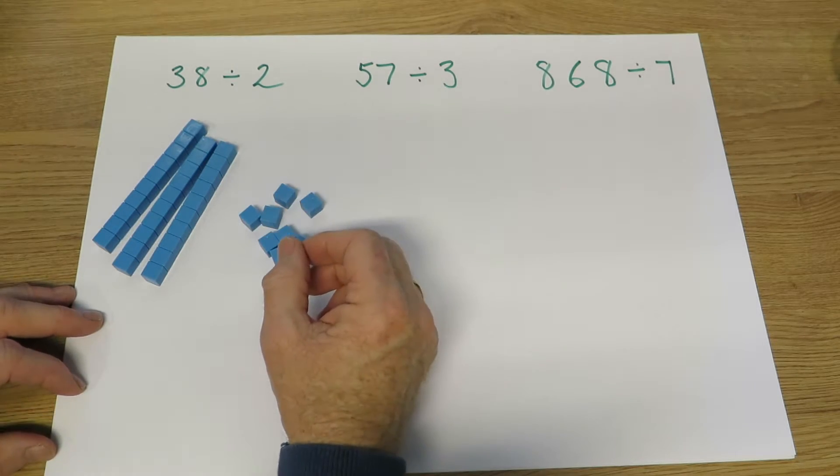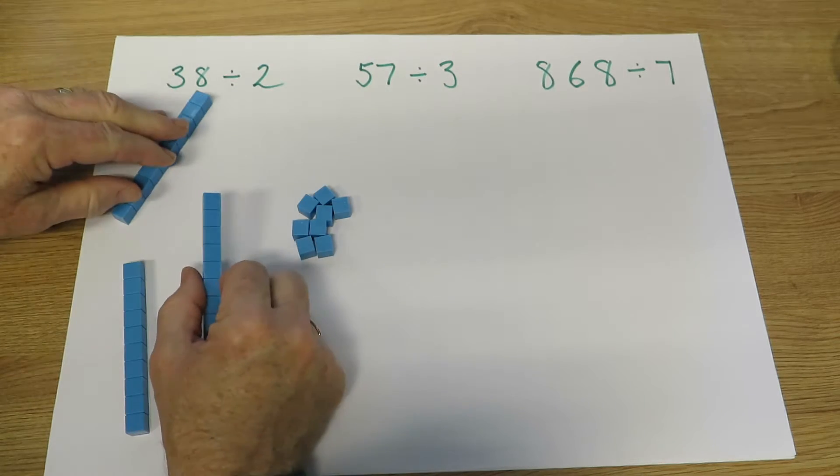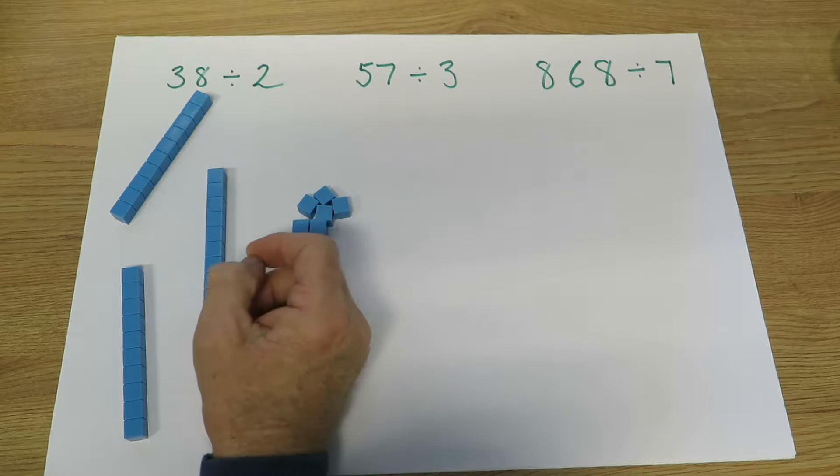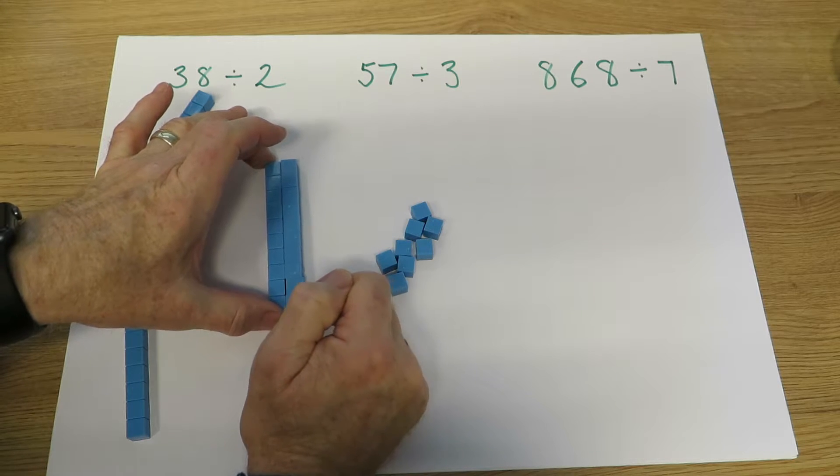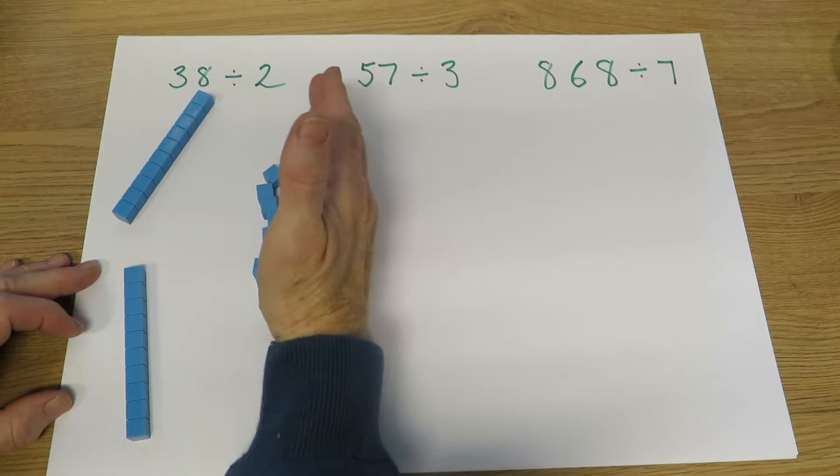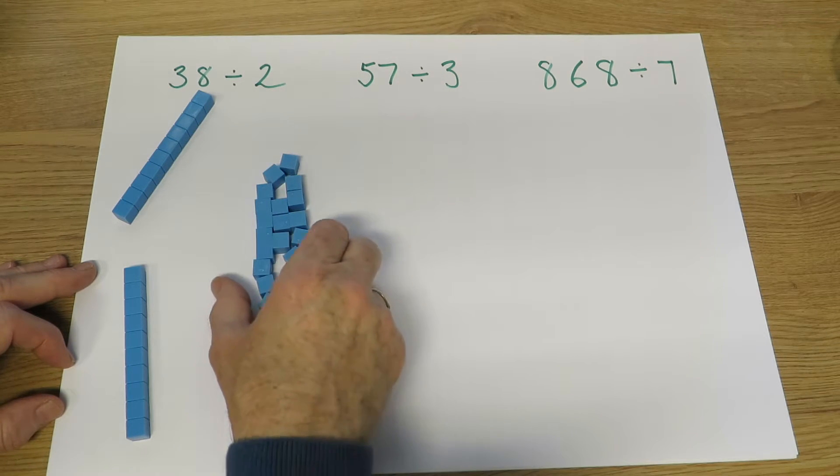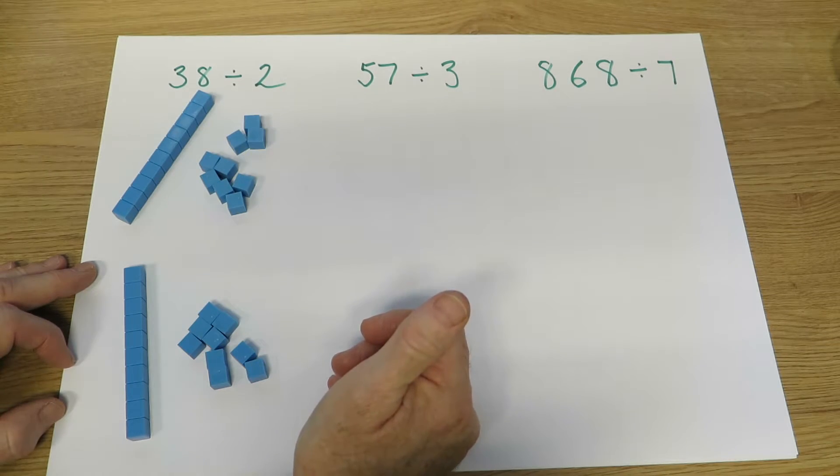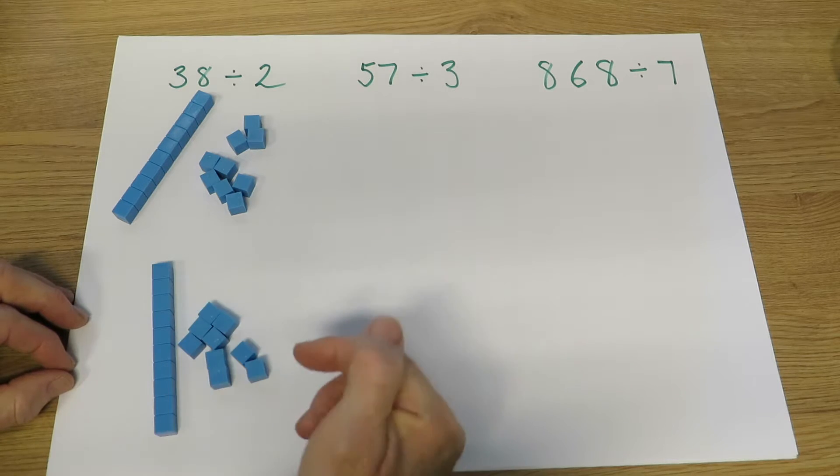We could say we're going to share between two. 38 shared between two. So we can share those two tens, but this 10 will need to be swapped for 10 extra units. That 10 goes. So now we've got 18 units all together. Share those between two, and there will be nine on each side. So 38 divided by two gives us 19.